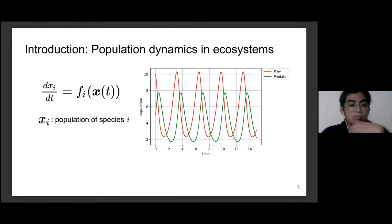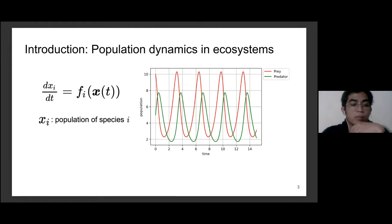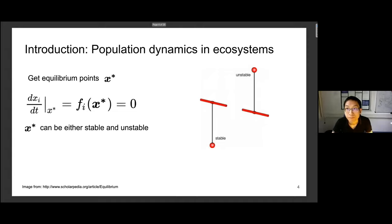The starting point of our project is population dynamics in ecosystems. If we let X sub i be the population of species i, we can create a first-order nonlinear differential equation on the population of each species. The dxi over dt is a function dependent on the populations of other species, since species are interacting — for example, the predator population is dependent on the prey population.